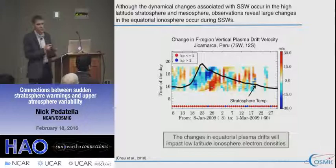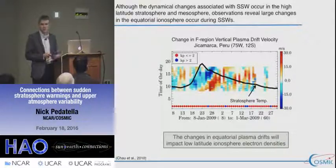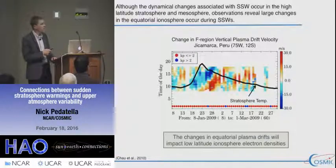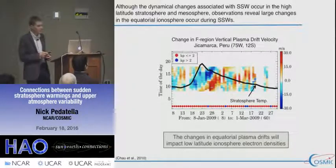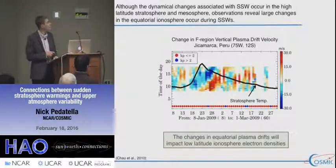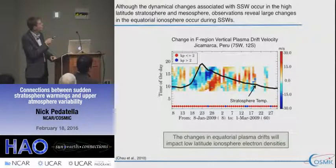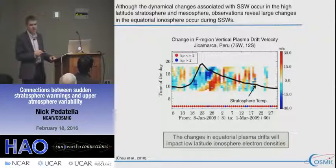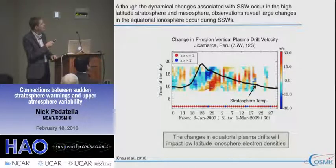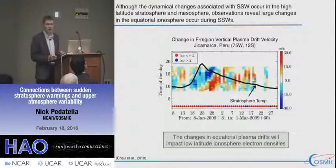Because these dynamical changes in the stratosphere and mesosphere are restricted to high latitudes mainly, it was surprising to see that the equatorial ionosphere shows quite large perturbations. This plot shows the change in the F-region vertical plasma drift observed at Jicamarca, Peru, which is at the geomagnetic equator — local time versus day. Around the peak of stratosphere warming, you get these large perturbations in the vertical plasma drift, with changes of plus or minus 30 meters per second, which is roughly 50 to 100 percent change in the magnitude of the drift.